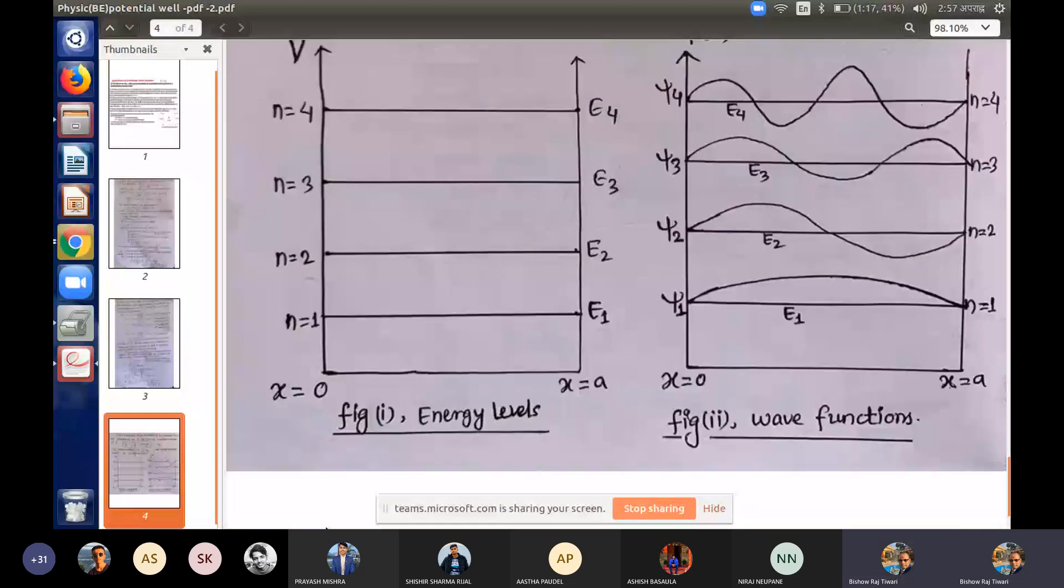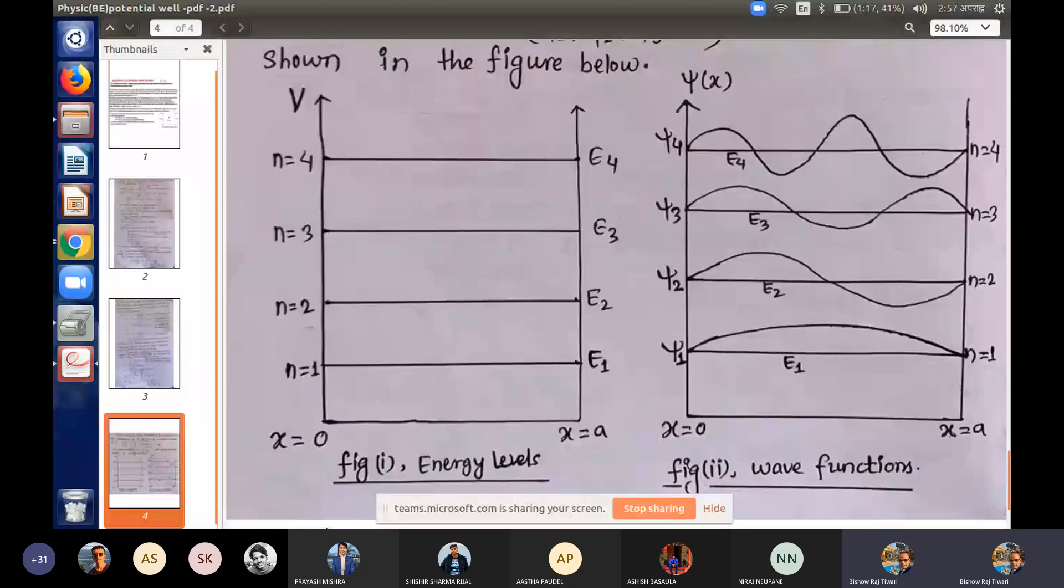The first energy level wave function is equal to half wave. The second energy level wave function is one full wave. After the third energy level, the frequency increases. The wave length and frequency vary. And E5, the particle's wave function at different energy levels.